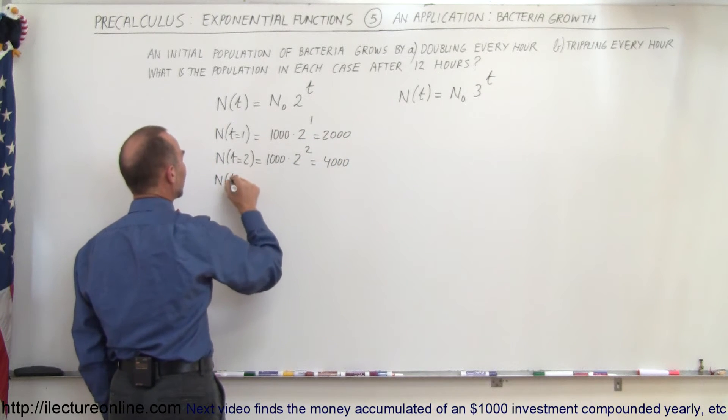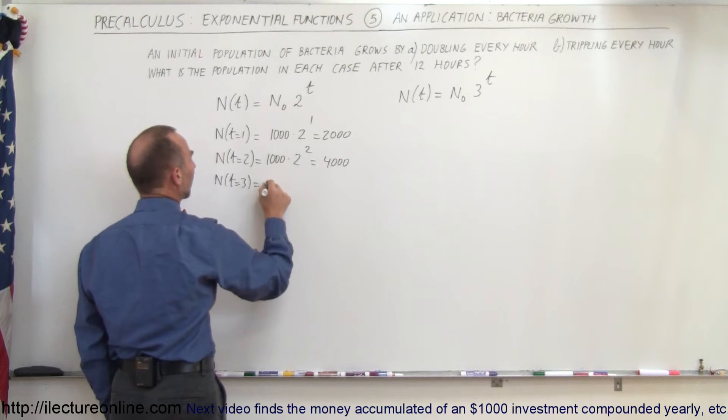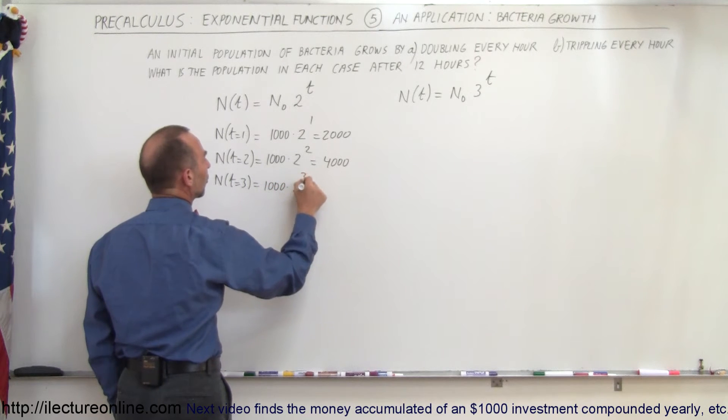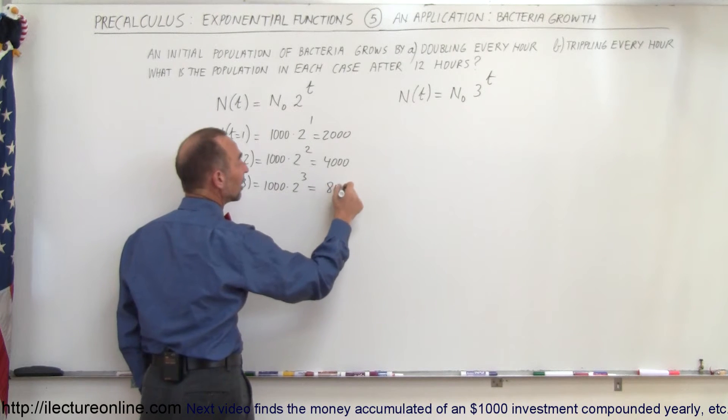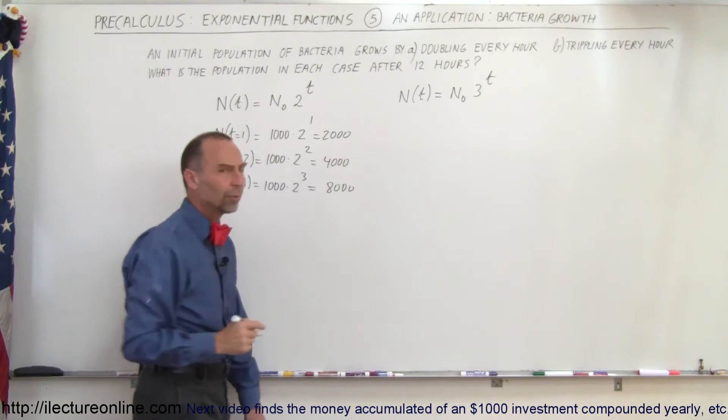N(3) equals 1000 times 2 raised to the third power. 2 to the third is 8, so 8 times 1000 is 8000. Again, you can see that the population doubled.